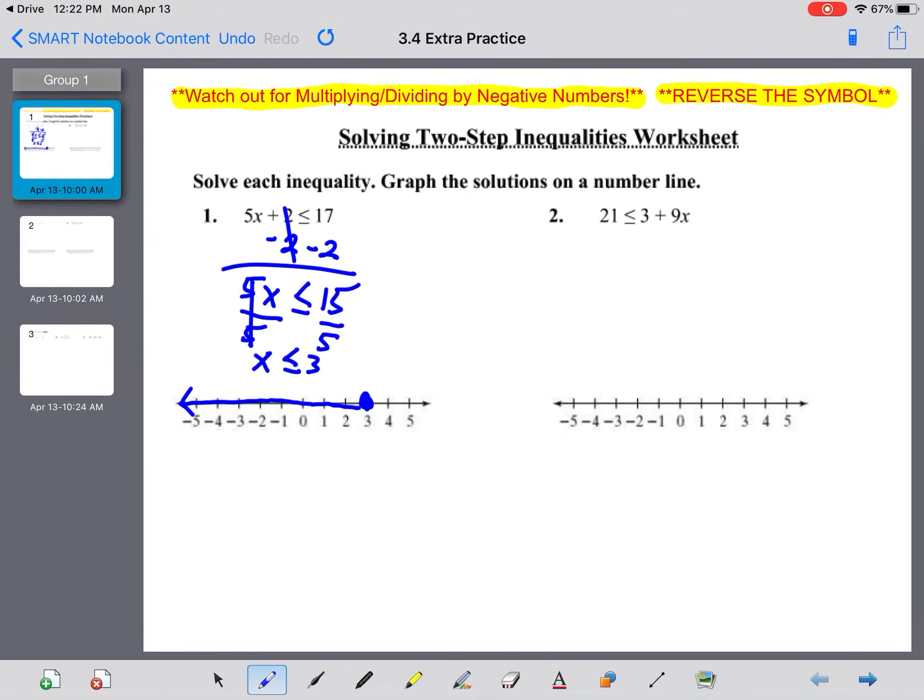The next one you can make things easier on yourself and rewrite it: 9x + 3 is greater than or equal to 21. You're going to subtract 3 on both sides. 9x is greater than or equal to 18. Divided by 9, x is greater than or equal to 18 divided by 9 is 2. So closed dot on 2; if x is greater than or equal to 2, its values to the right.